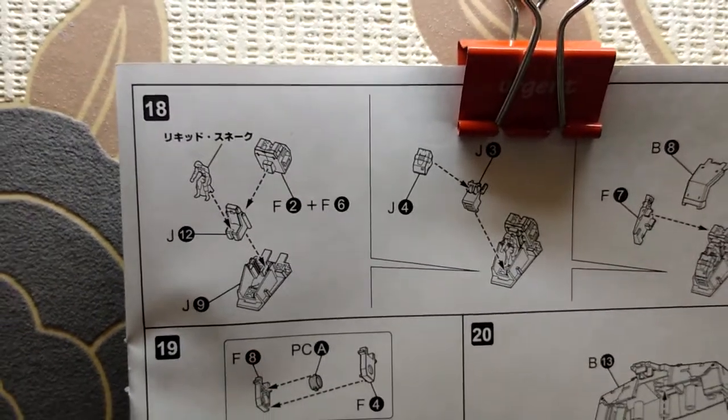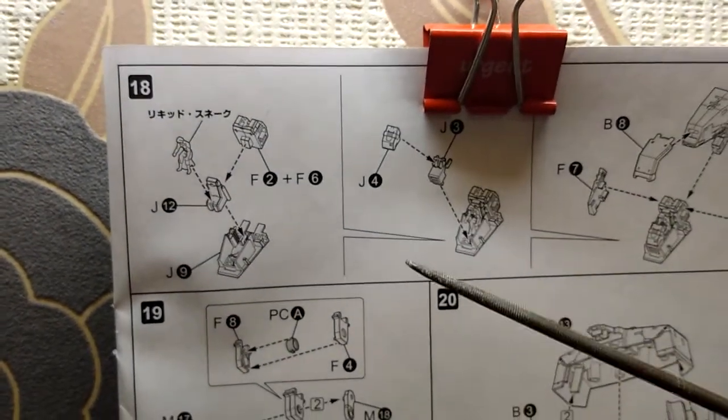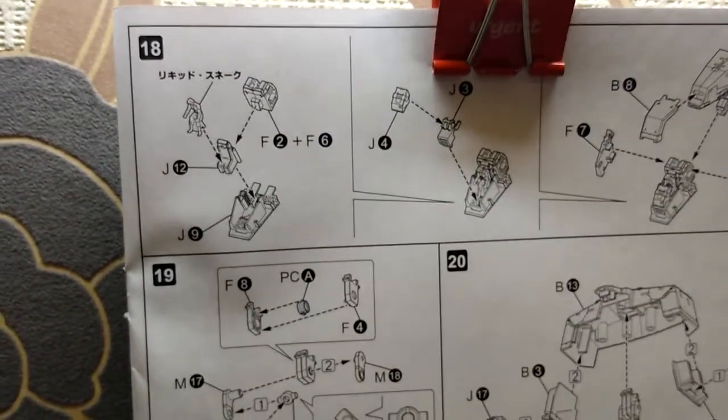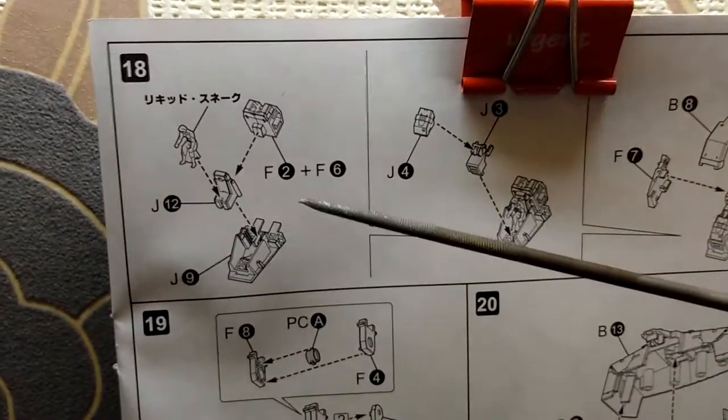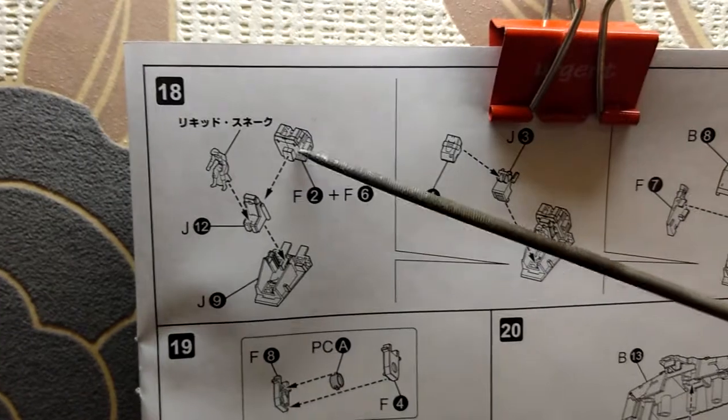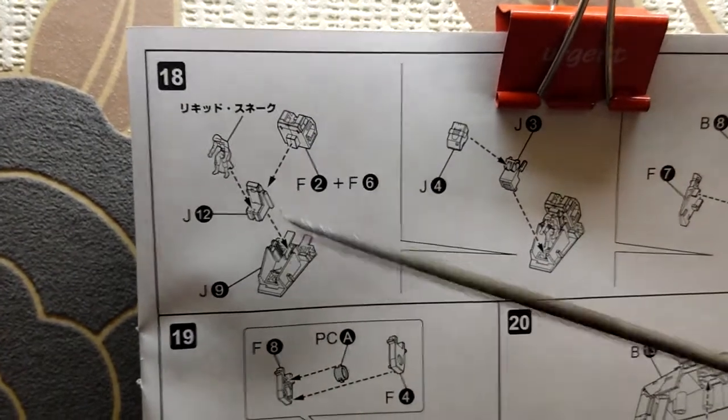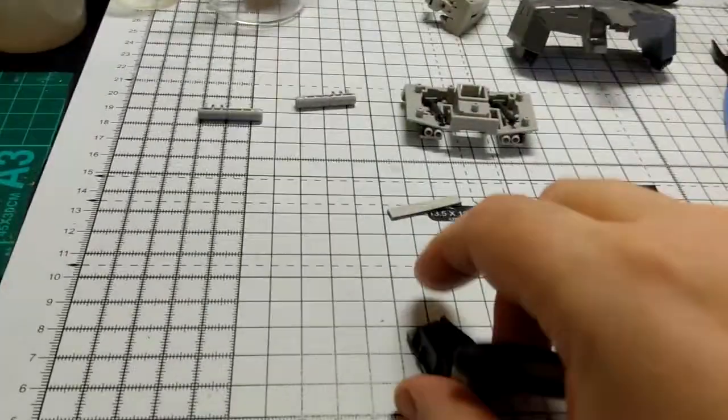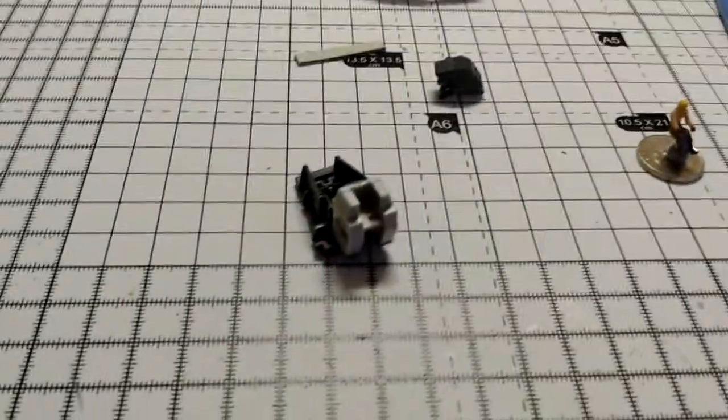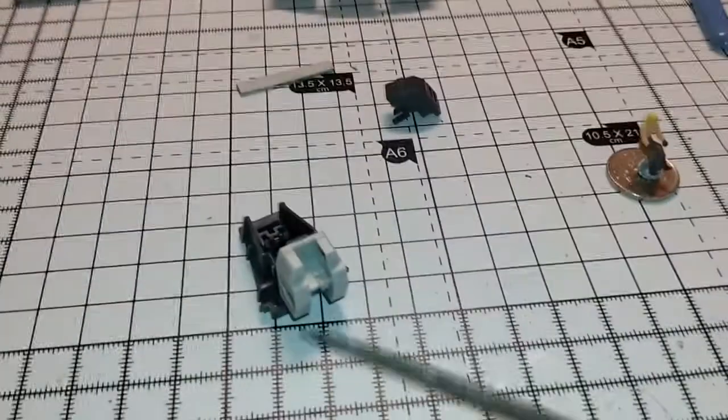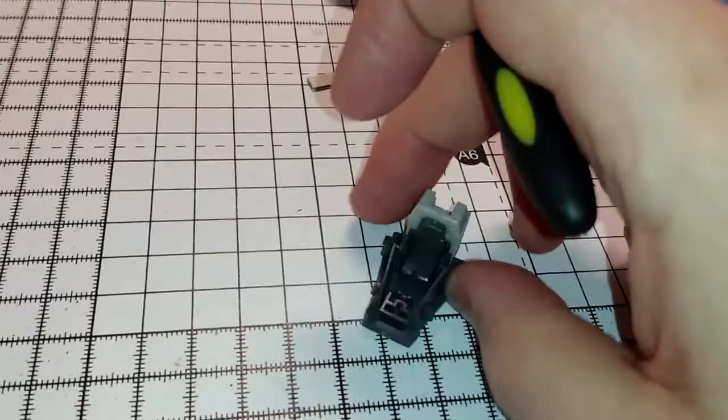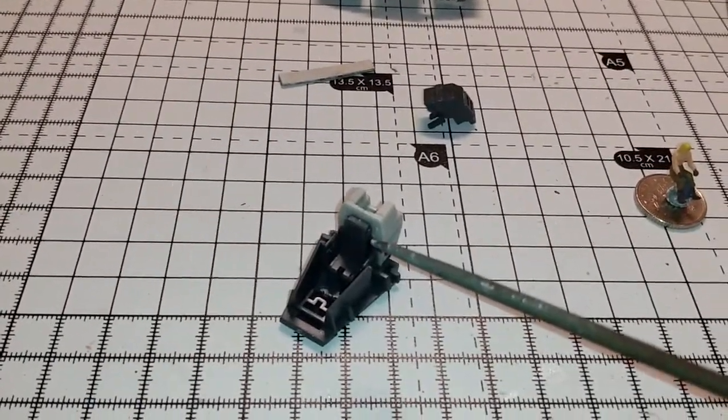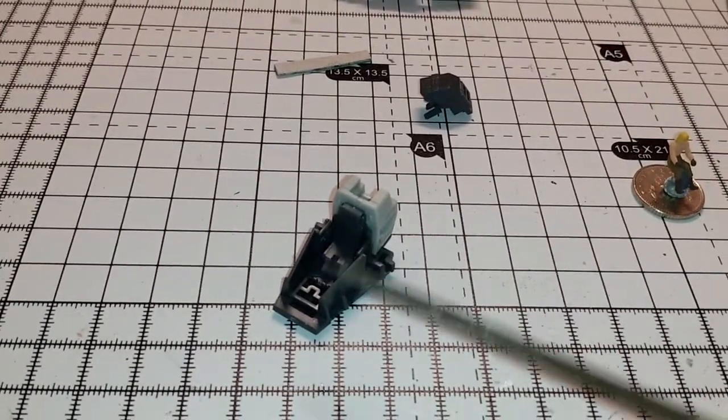Welcome back, step 18 on the next page. This is the interior cockpit, which I mistakenly identified in step 17 where step 17 was the top part of the head. So first part of step 18, you've got F2 and F6, which is a backrest for the operator's seat, which plugs into J9. So there's F2 and F6. Then you push J12 for the operator's seat into F2 and F6, and then you push that into J9 to meet the first part of the cockpit.